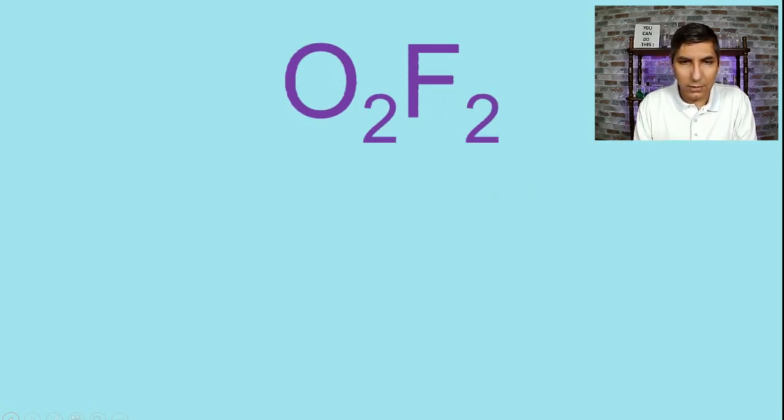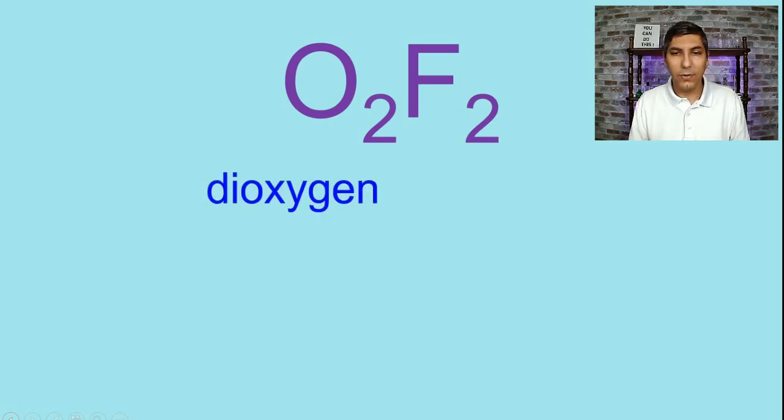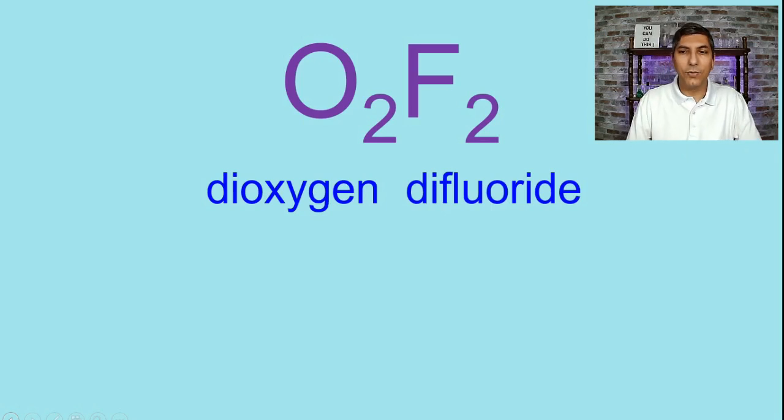We'll do one more here in this video. O2F2. So the prefix for two is di, and O is oxygen. So we have dioxygen. And then F is fluorine. But we change its ending to IDE. So that's fluoride. And we have two of them. So that's difluoride. So dioxygen difluoride. Once again, we change the ending of the last element to IDE. We don't do that for the first element. We use those numeric prefixes. And we never start the name of a compound, of a covalent compound anyway, with mono.